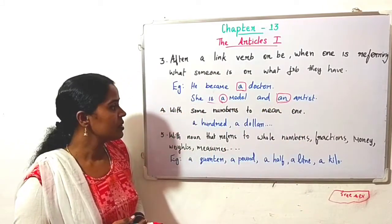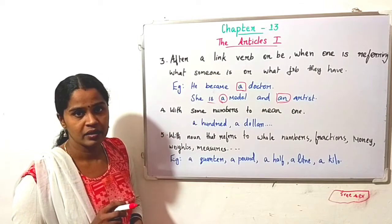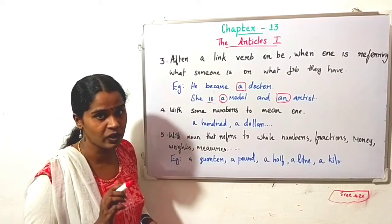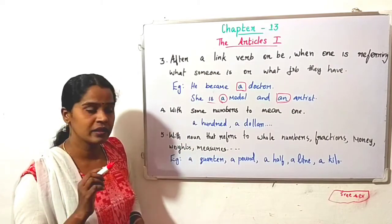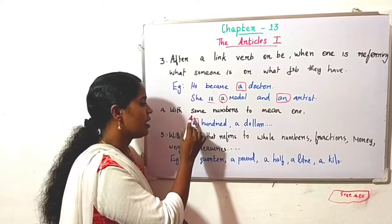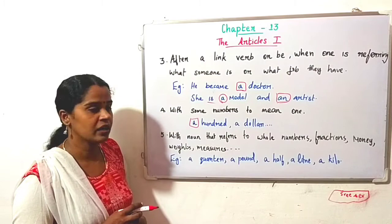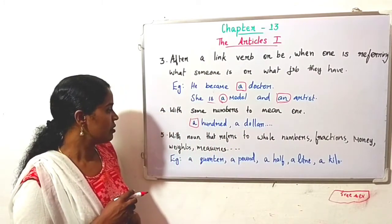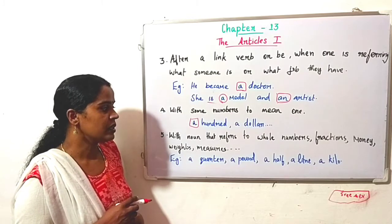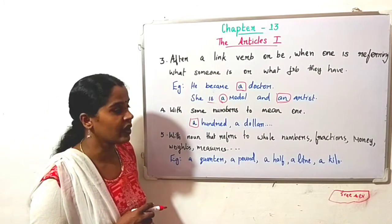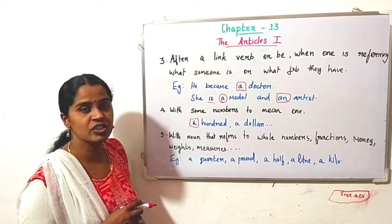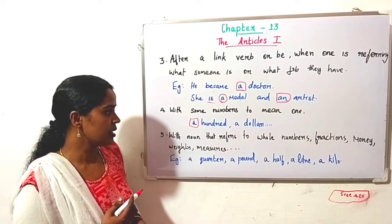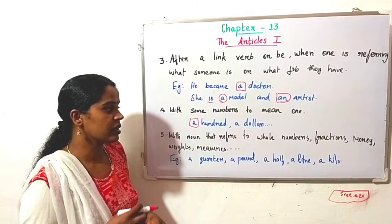Fourth one: with some numbers to mean one. Actually 'a' and 'an' meaning itself is one. A hundred here means one hundred. A dollar here means one dollar. Fifth one: with nouns that refer to whole numbers, fractions, money, weights, measures. See: a quarter, for example, we can see in the fraction.